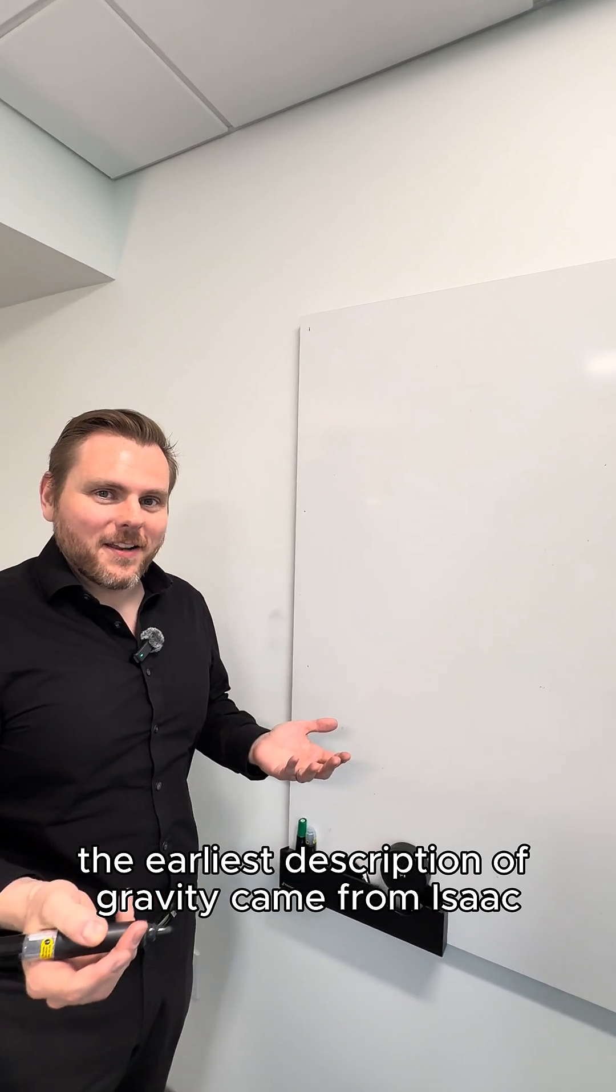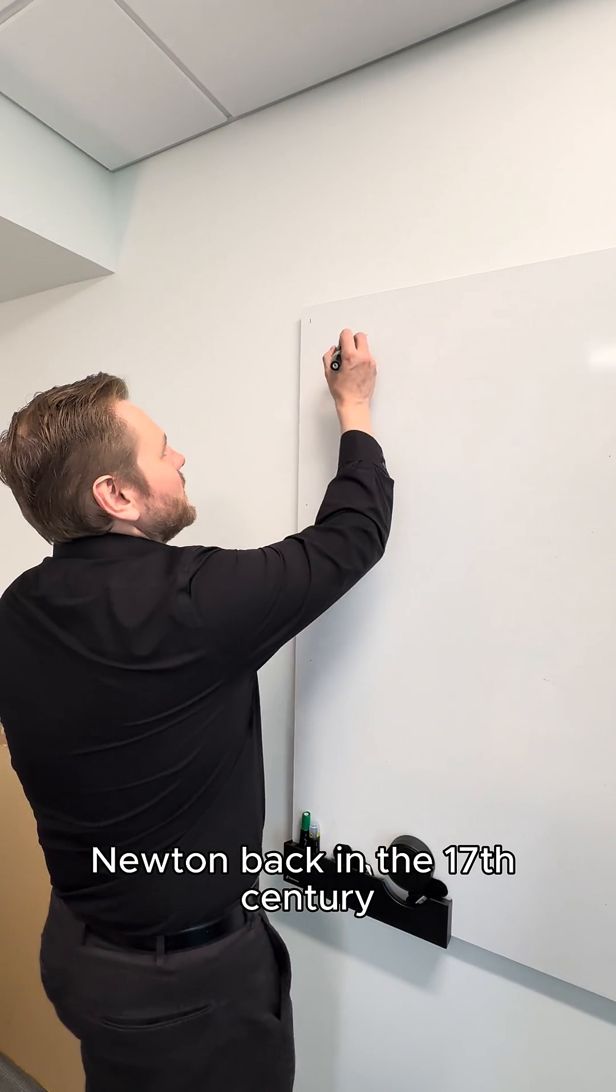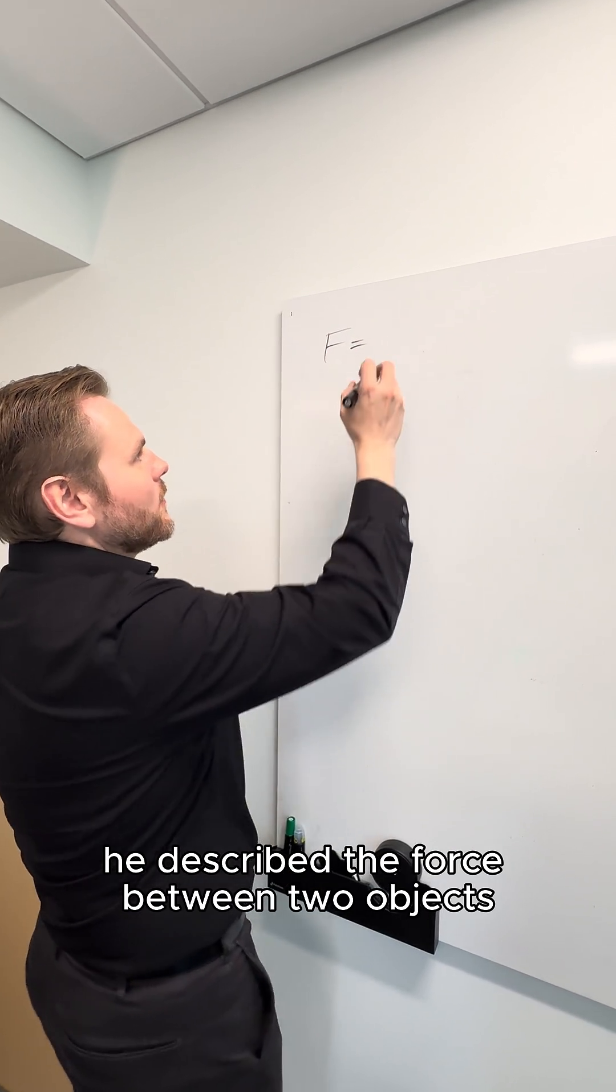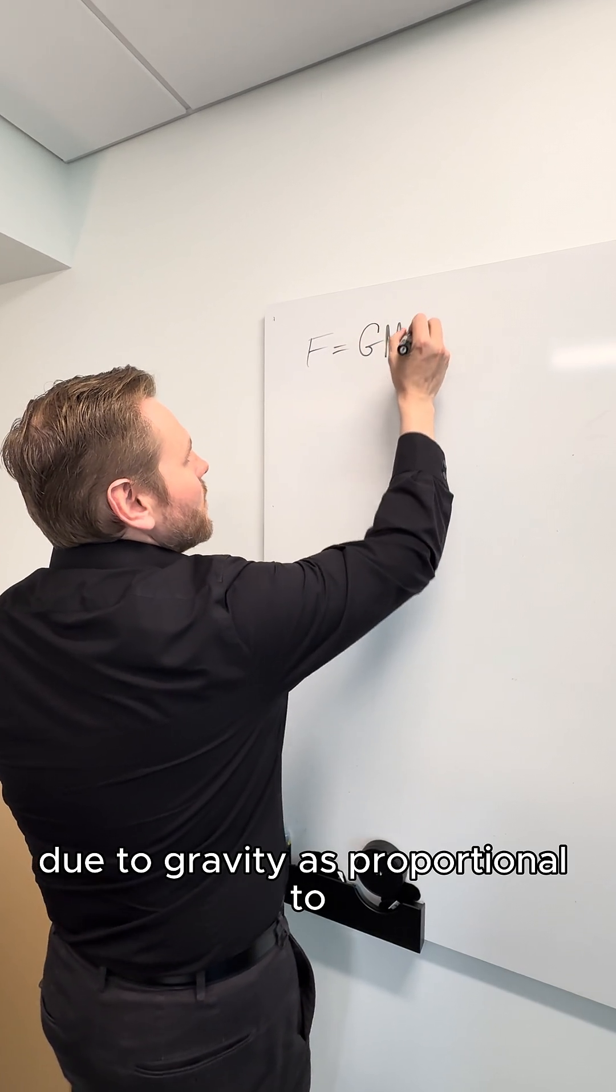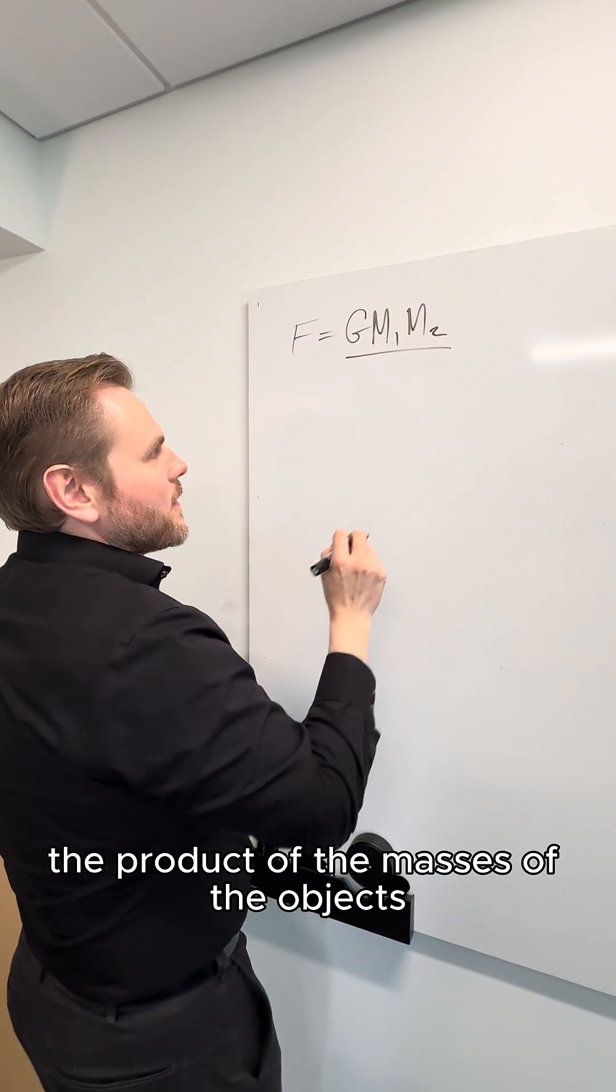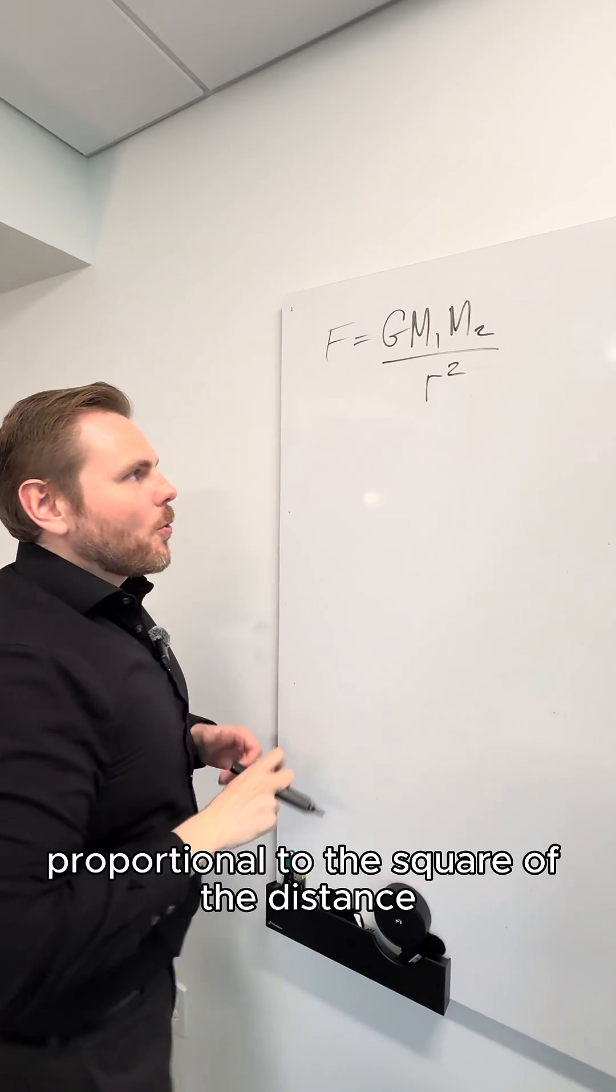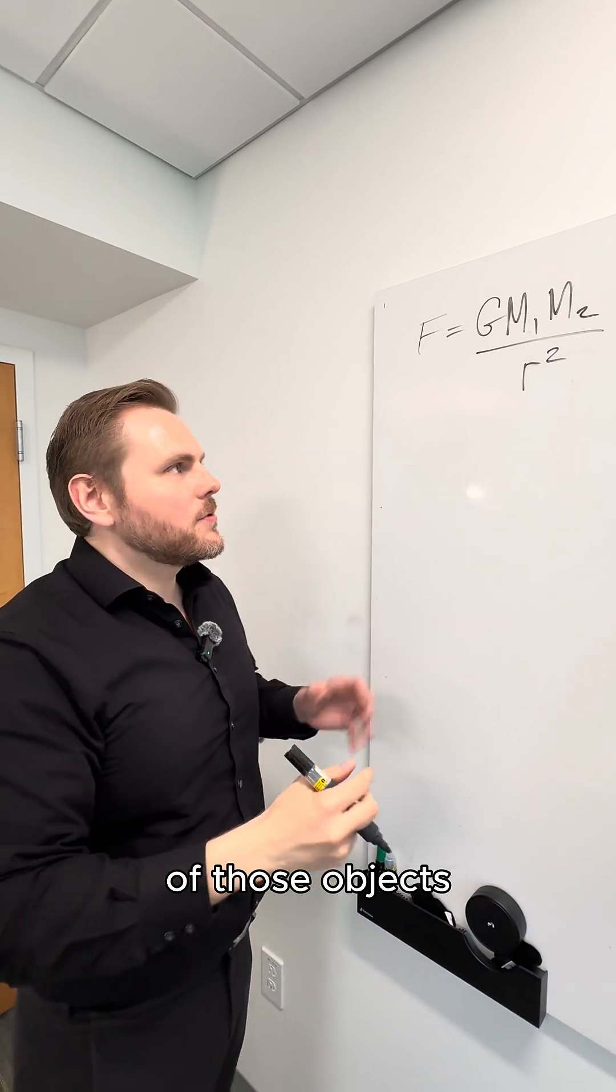We know that the earliest description of gravity came from Isaac Newton. Back in the 17th century, he described the force between two objects due to gravity as proportional to the product of the masses of the objects and inversely proportional to the square of the distance of those objects.